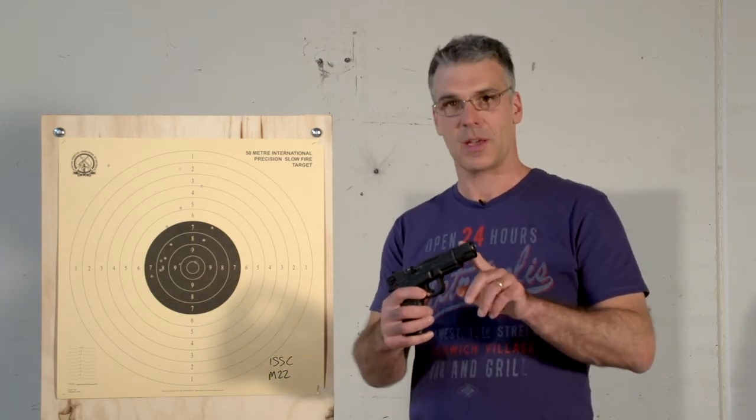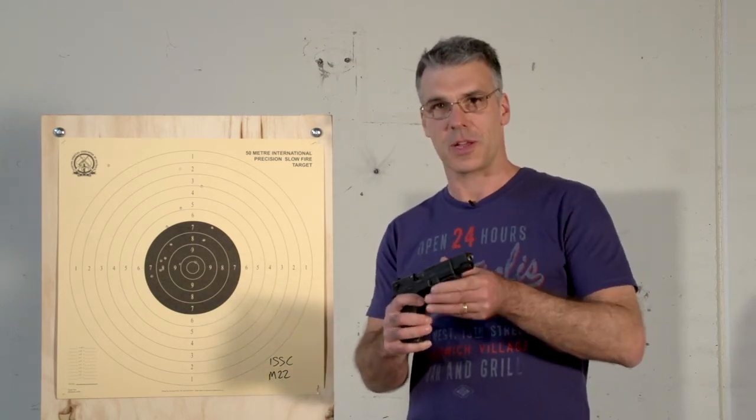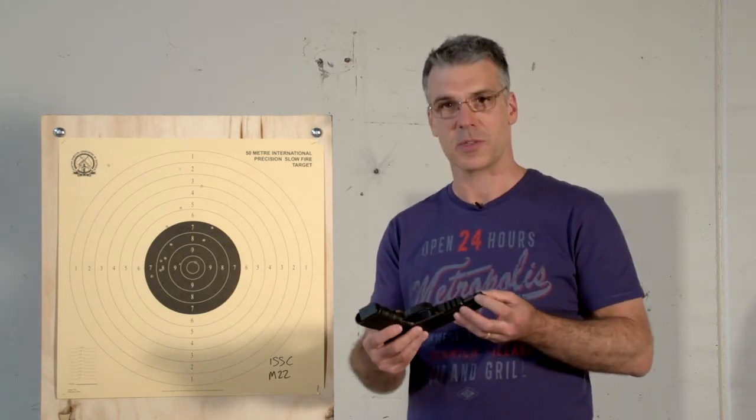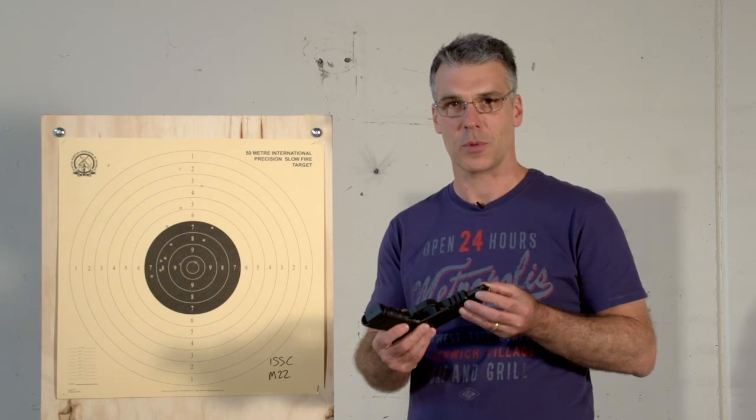What actually happened was that the slide extension including the front sight started to come loose from the barrel. It's held in place by a single grub screw which had started to come loose so the front sight was wiggling around putting off my aim.